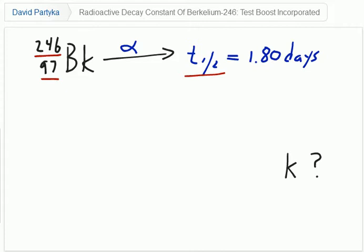To be able to solve this problem, we have to first remember the relationship between the amounts that we have at certain times, the decay constant, and the time that has elapsed. The appropriate equation is an integrated form of a differential equation: the amount at time t is equal to the amount at time 0 times e to the negative k times t, where the decay constant we're solving for is k.